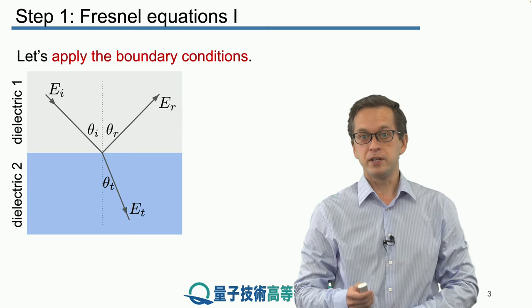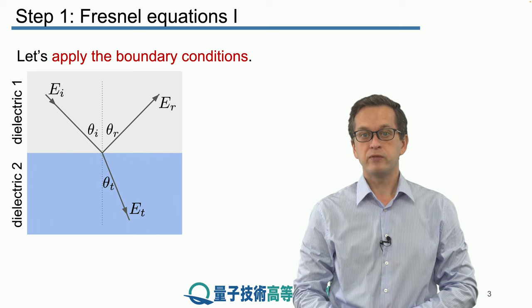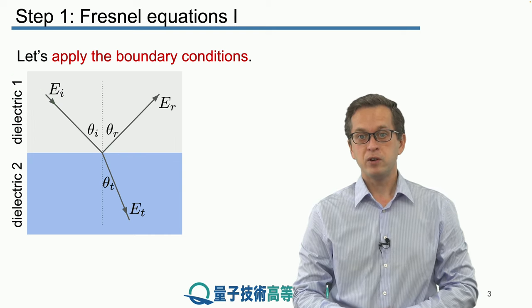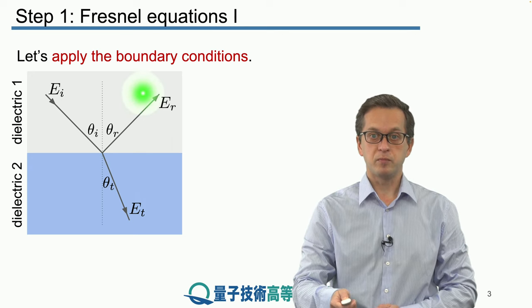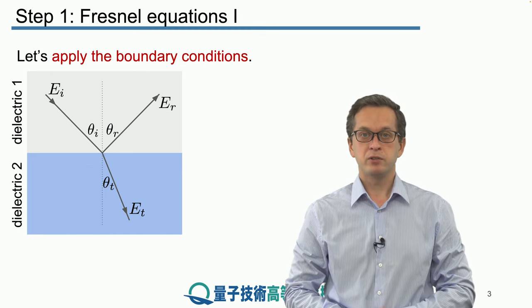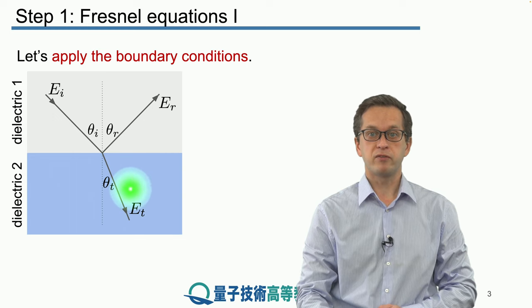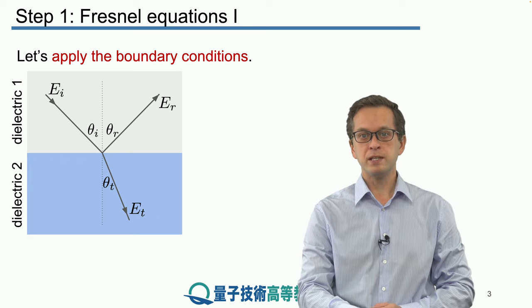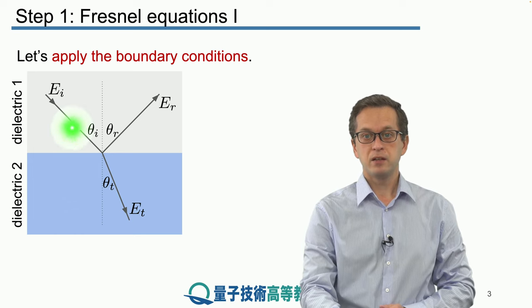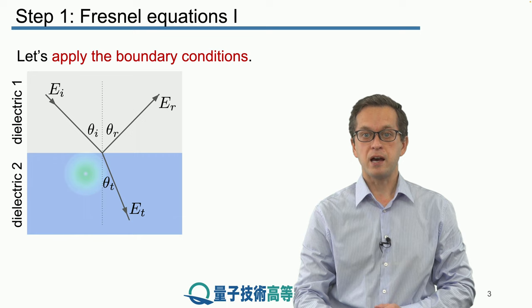So let's remind you of the usual scenario that we have in mind. We've got two dielectrics — dielectric 1 and dielectric 2 — and we've got our incident electromagnetic radiation traveling in this direction. At the boundary, we know from observations that some part of it is reflected, represented by this arrow here Er, and some part of it is refracted. Theta i is the angle of incidence, theta r is the angle of reflection, and theta t is the angle of refraction.